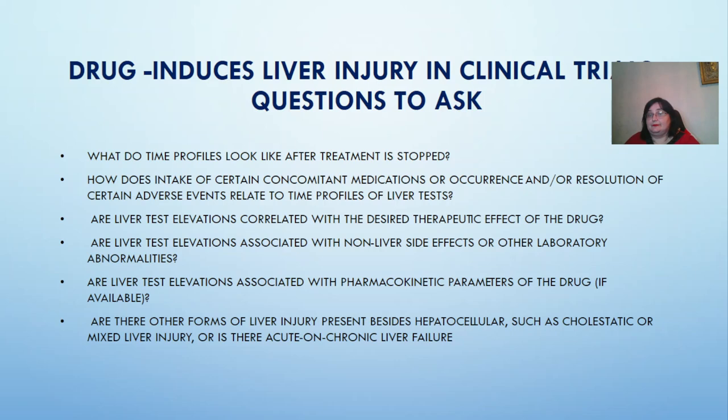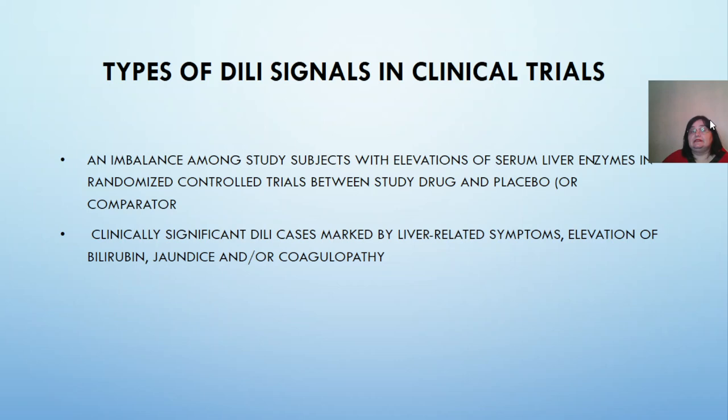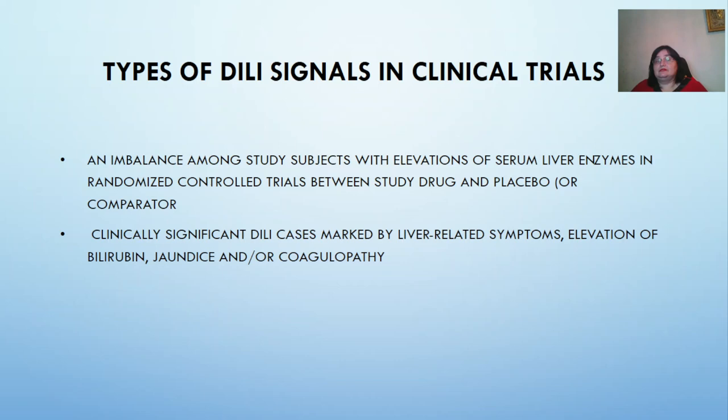Are there other forms of liver injury present besides hepatocellular, such as cholestatic or mixed liver injury? Is there acute or chronic liver failure? Types of drug-induced liver signals in clinical trials include: an imbalance among study subjects with elevation of serum liver enzymes in randomized controlled trials between the study drug and placebo or comparator; and clinically significant drug-induced liver injury cases marked by liver-related symptoms, elevation of bilirubin, jaundice, and encephalopathy.